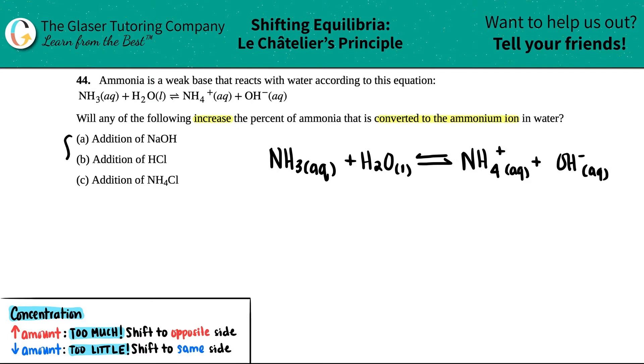We're going to be looking at these in three separate examples. So what is the object of the game? The question said will any of the following increase the percent of ammonia that is converted to the ammonium ion. So they want to increase the percentage of ammonia, which is this, that is converted to ammonium ion, which is this. So if I want to convert this to this, seems like I want to do the forward reaction.